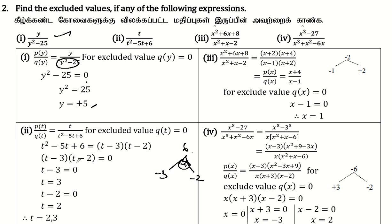This is the denominator. If t minus 3 equals 0, t equals 3. If t minus 2 equals 0, t equals 2. The t values are 2 and 3.